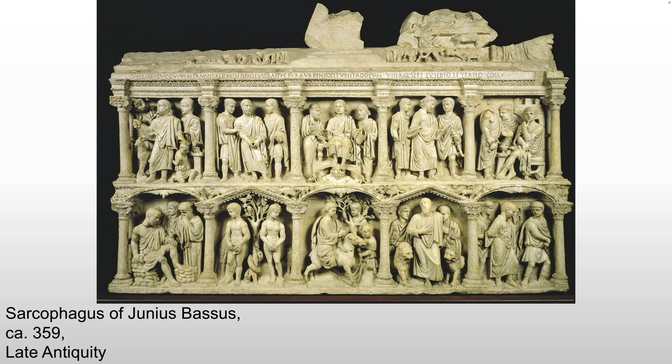We also see it decorated on three sides. If it's pushed up against a wall, you wouldn't decorate the fourth side. And we see two registers, two levels, each with five framed scenes. We also see Greek and Roman architectural influence — arches, pediments, the columns, for example.